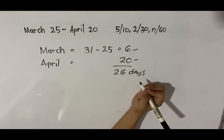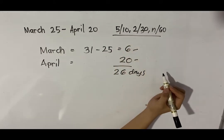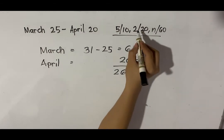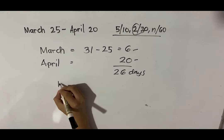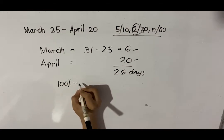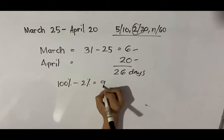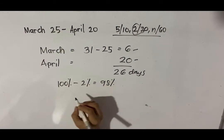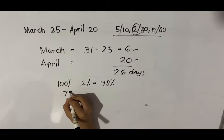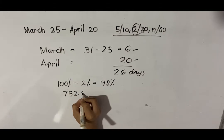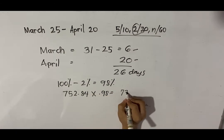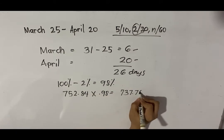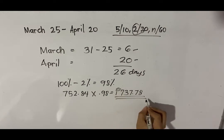Is there a discount? Yes. Under the term 5/10, 2/30, net 60, we will be considering a 2% cash discount on this purchase. Therefore, 100% minus 2% is equal to 98%. Multiplying 752.84 by 0.98 gives us 737.78. This is the amount to be paid to settle the account.